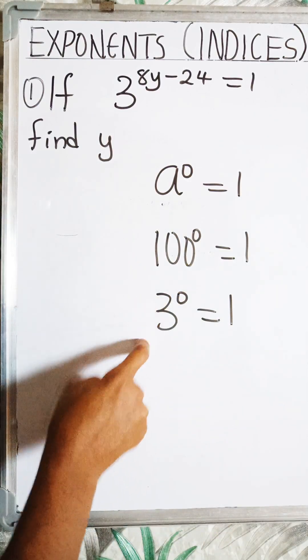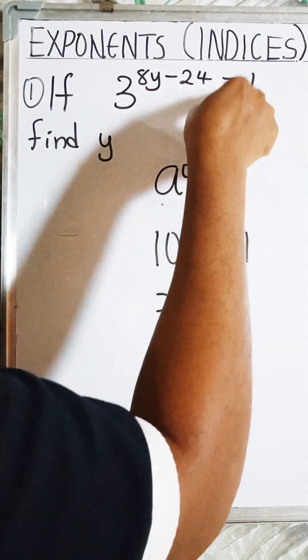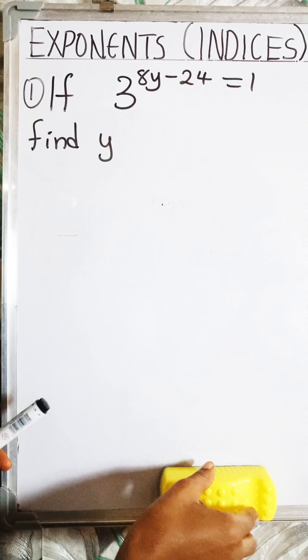Okay, that means I can replace 3 raised to the power 0 here because 3 raised to the power 0 is the same thing as 1. Okay, so now we can begin to solve.